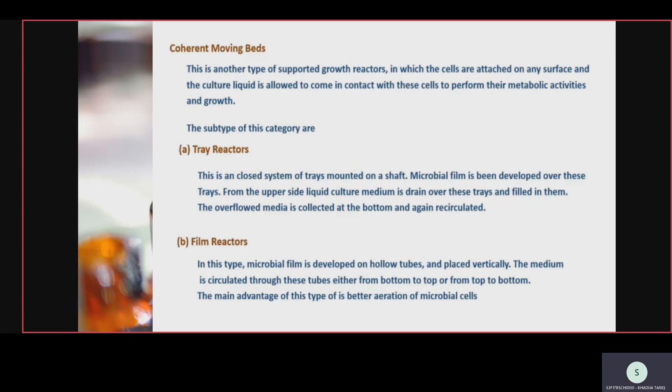In film reactors, the medium is circulated through the hollow tubes either from top to bottom or bottom to top. The main advantage is better aeration — in tray reactor better aeration does not take place as the liquid is drawn from the upper side and extra liquid moves downward then upward. When it moves top to bottom then bottom to top, better aeration is achieved.